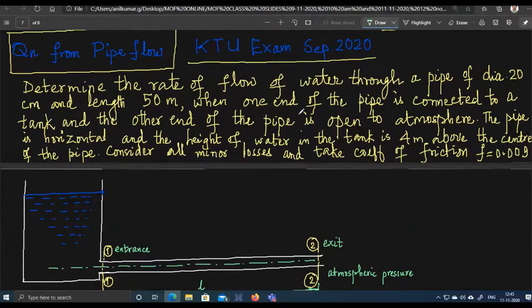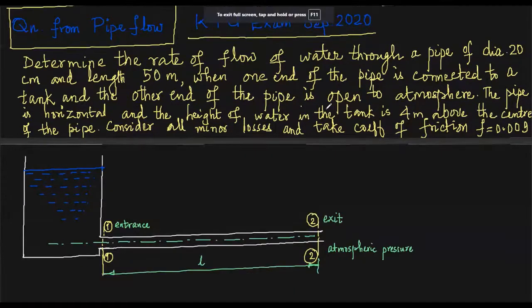Determine the rate of flow of water through a pipe of diameter 20 centimeters and length 50 meters when one end of the pipe is connected to a tank and the other end of the pipe is open to atmosphere. The pipe is horizontal and the height of water in the tank is four meters above the center of the pipe.